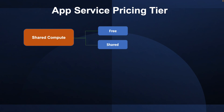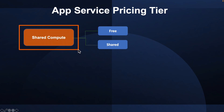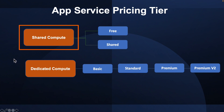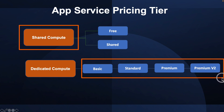So let's go through the different categories for this pricing tier. The first one is Shared Compute. Shared Compute has Free and Shared tiers — these are the base tiers. You can use this to run an app on the same Azure virtual machine as other app service apps, including apps of other customers. These tiers allocate CPU quotas to each app that runs on the shared resources, and the resources cannot scale out. The next one is Dedicated Compute, which has Basic, Standard, and Premium including Premium version 2.